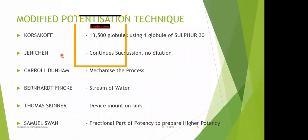Jenichen considered that there is no need for further dilution — you can just prepare one potency and continuously give succussion without diluting. After 10 successions, he gives again 10 more succussions, so that it becomes 2X or 2C. That is Jenichen's potency.